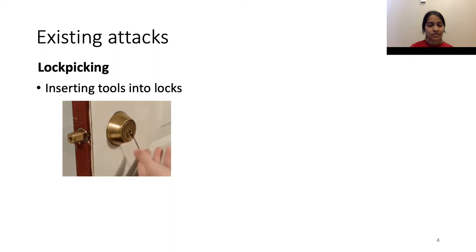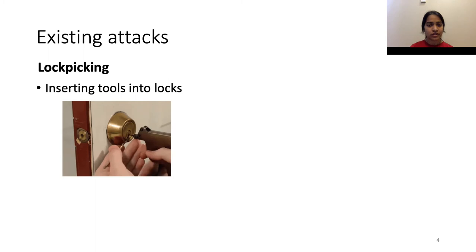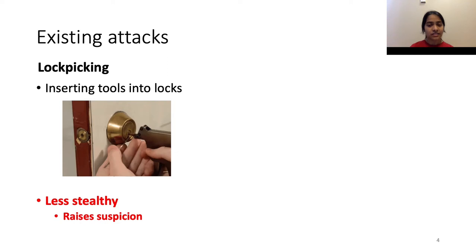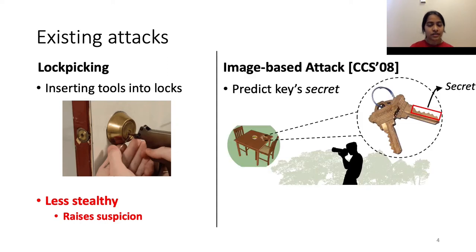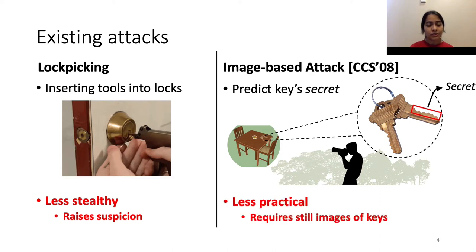Some of the well-known existing attacks on these systems include lockpicking, which involves inserting tools into locks in order to unlock the mechanism. However, this has the disadvantage of being less stealthy, as inserting specialized tools raises suspicion. To overcome this, researchers proposed an attack which involves capturing images of keys in order to predict the key secret, which is actually embedded in the key surface. However, this approach also has a limitation: it requires still images of keys and hence is less practical in a non-stationary setting.